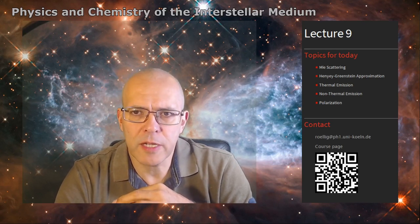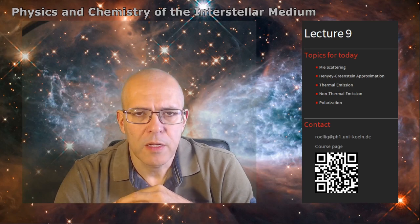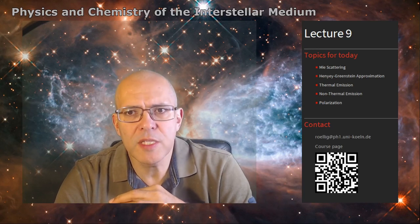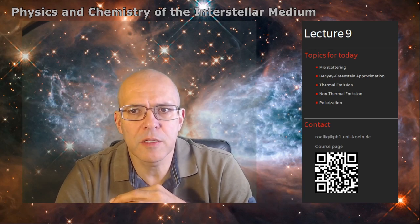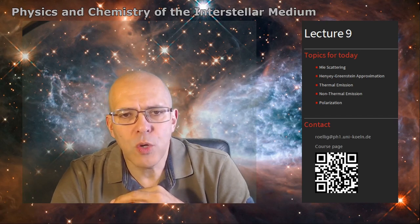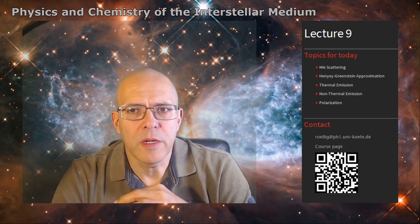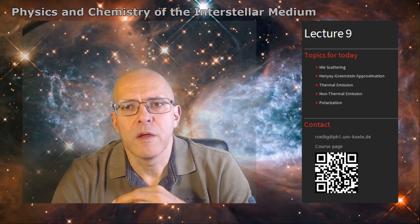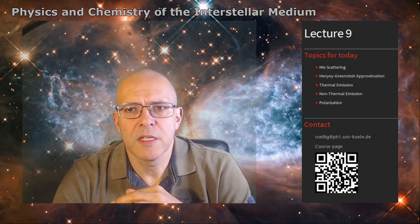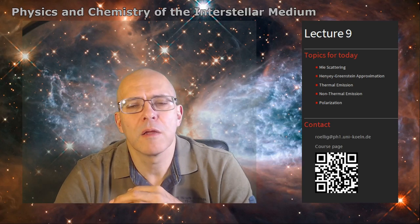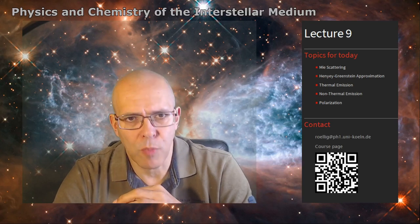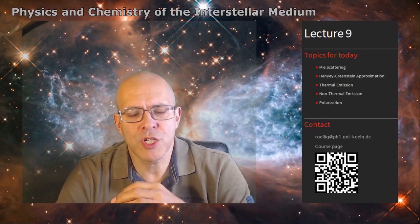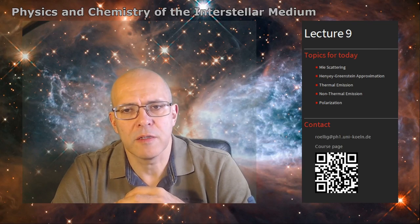We start by looking at how scattering is described. This is the first section on Mie-Scattering. In the second section we look at a particular approximation, the Henyey-Greenstein approximation. We then look at the thermal emission by dust grains and how this is computed. In the fourth section we discuss non-thermal emission characteristics, particularly by very small dust particles. And in the last part we look at polarization characteristics of dust emission.